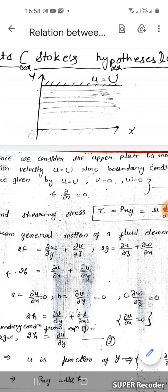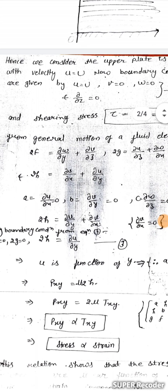Here u, v, and w are the components of velocity in the x, y, and z directions respectively, and capital U is the velocity of the moving upper plate. The shearing stress is equal to Pxy, where Pxy is the stress component in the y-direction in the x-direction. This is equal to mu times du/dy. This is equation number two.